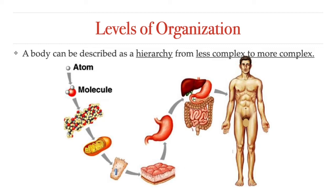Many molecules that are biologically important are macromolecules — large molecules that are typically formed by polymerization, a process by which a large molecule is made by combining smaller units called monomers. An example of a macromolecule is proteins. A protein is a polymer of hundreds of amino acids bonded together. Macromolecules make up organelles, which are found within cells, which are the basic unit of life.